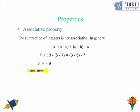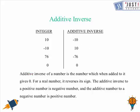Now these were the properties. Let's move on to the additive inverse now. So additive inverse of a number is the number which when added to it gives you 0. For a real number, it reverses its sign. So in general we just need to reverse the sign of the integer to get to its additive inverse. Let's have a look at some examples.